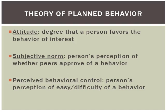To review, the three constructs for the Theory of Planned Behavior are: attitude — the degree that a person favors the behavior of interest; subjective norm — the person's perception of whether peer groups or significant others like a parent, partner, or children approve of the behavior and value their participation in it; and perceived behavioral control — a person's perception of whether the behavior is easy or difficult.